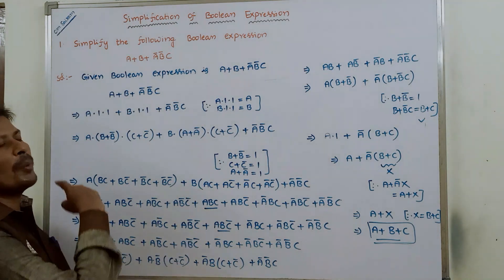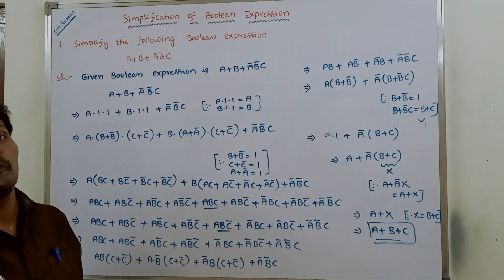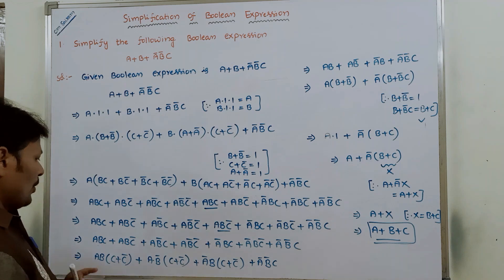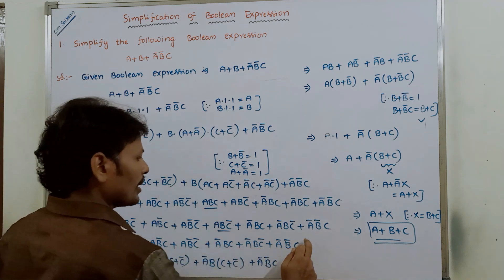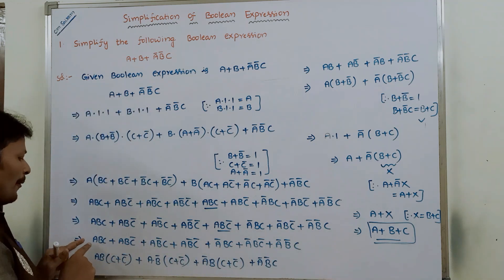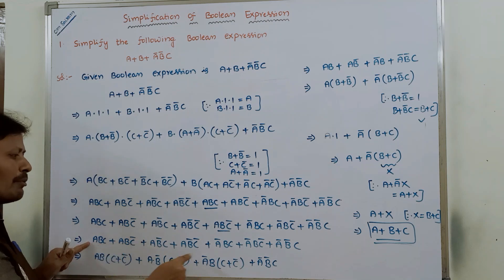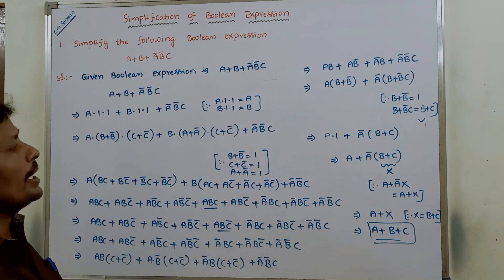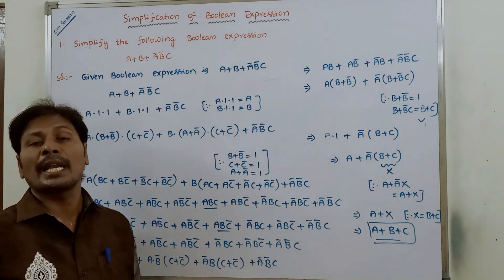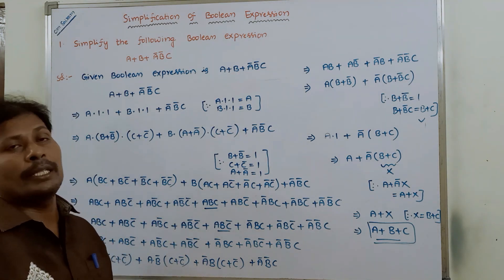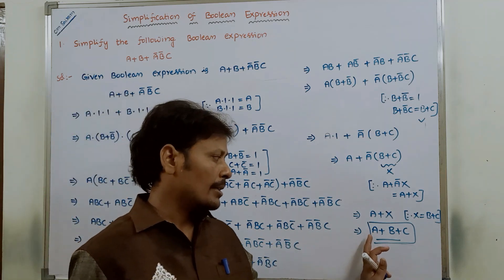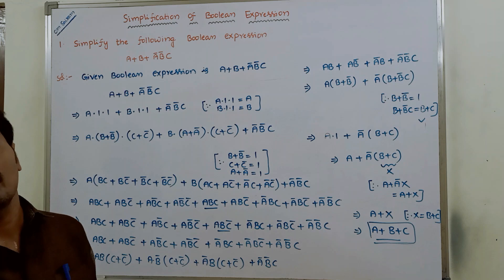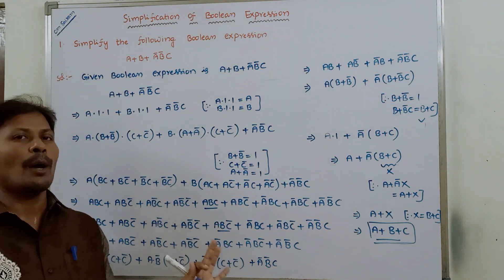The same problem can also be solved using a Karnaugh map. By converting the expression into minterms and using a three-variable Karnaugh map, we also obtain the same simplified expression a + b + c.